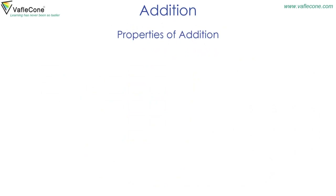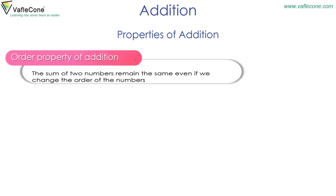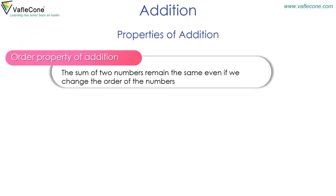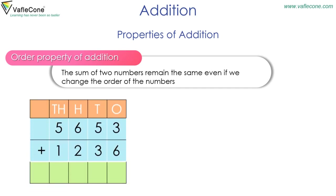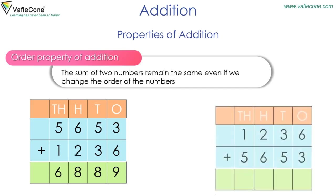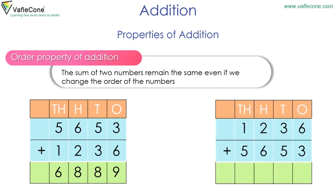Properties of addition. Order property of addition: the sum of two numbers remains the same even if we change the order of the numbers. For example, 5653 plus 1236 is equal to 6889. Also, 1236 plus 5653 is equal to 6889.